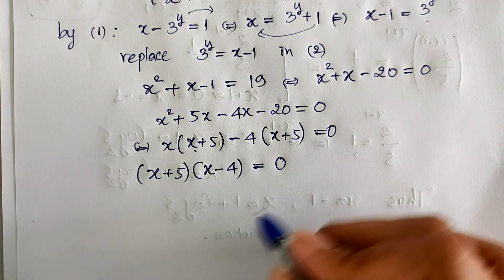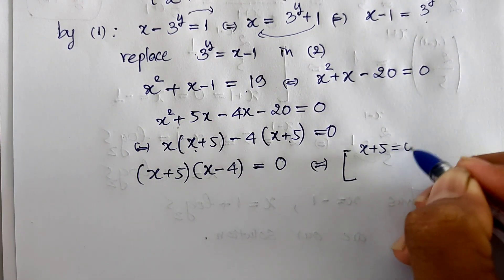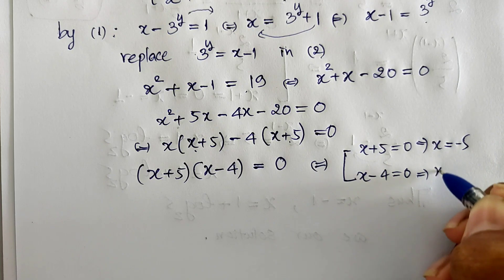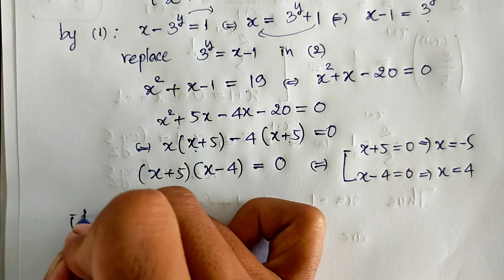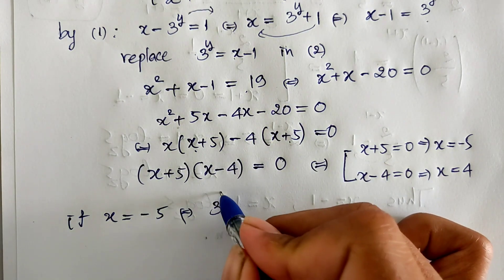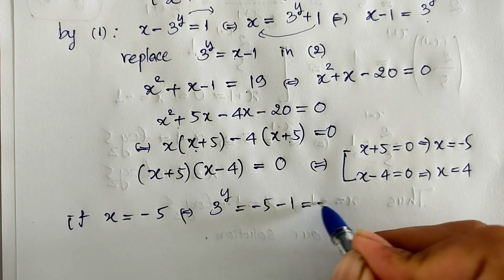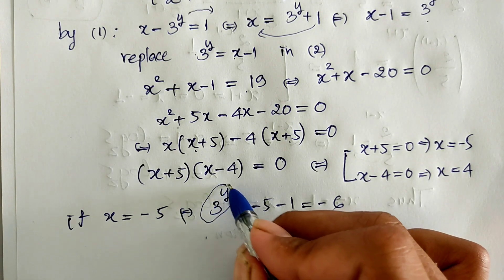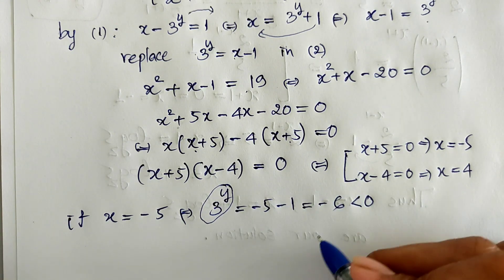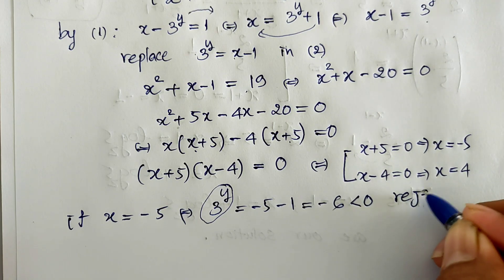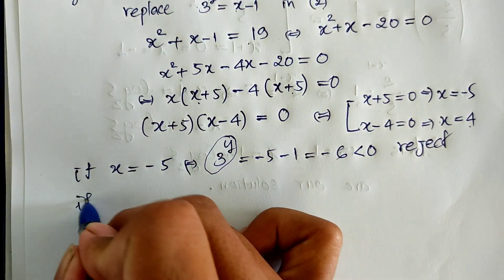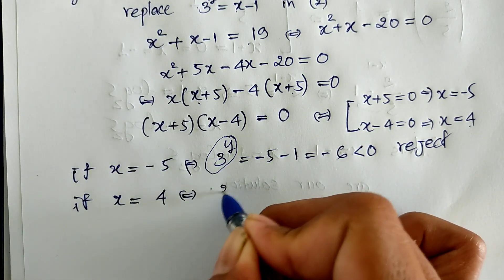We get two values of h: h equals minus 5 and h equals 4. If h equals minus 5, we replace in the equation and get 3 to the power y equals minus 5 minus 1 equals minus 6. But the value of 3 to the power y must be positive in an exponential equation, so this negative value is rejected.